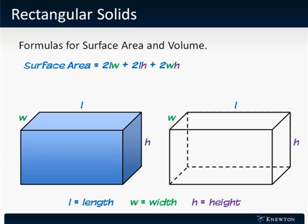That's because two faces of this rectangle have the dimensions L and W, in this rectangle the top and bottom. Two have the dimensions L and H, the front and back. And two have the dimensions W and H, the two sides of the rectangle.